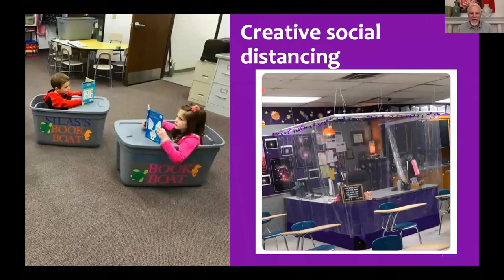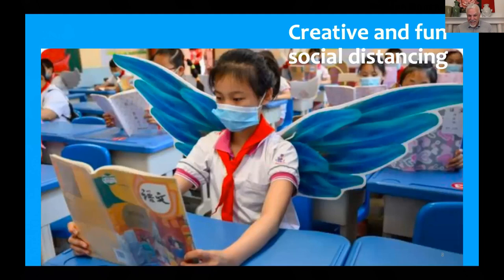Here are a couple of examples from elementary or primary school classrooms. I love the book boats — made out of old shipping containers of some kind — just a fun way to keep students in a certain place. And here's a picture from China where a little girl is wearing wings. She's wearing the wings to remind her that you can't get too close to other students — if you do, you start banging into them. It's creative. Teachers have come up with so many creative ideas this past year, using critical thinking for all sorts of processes in the classroom.